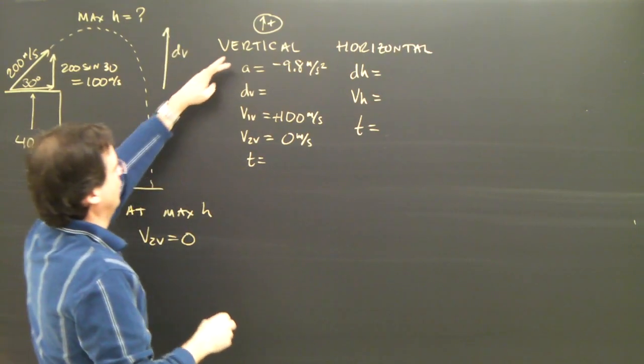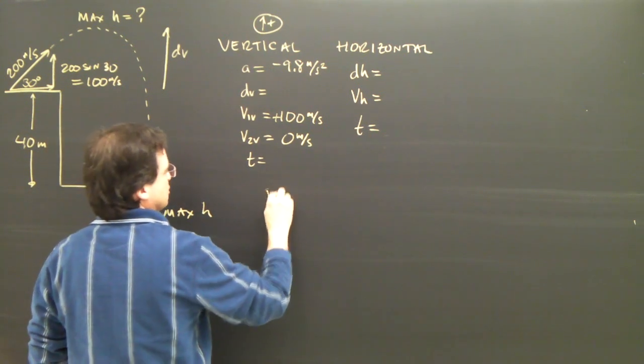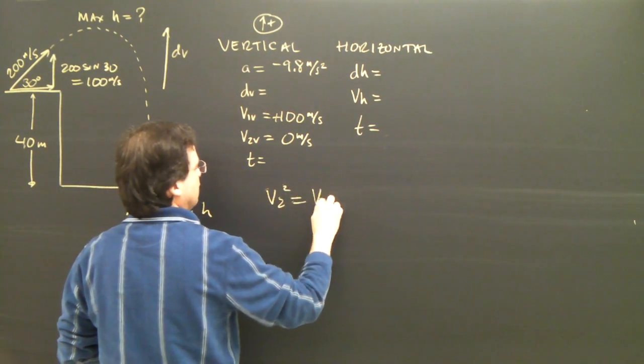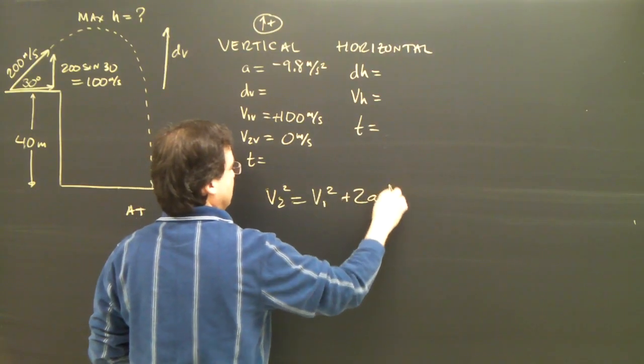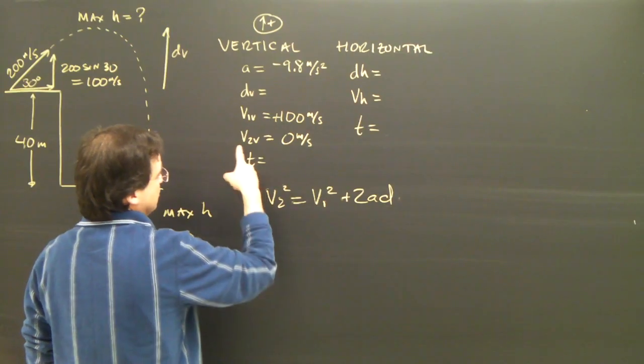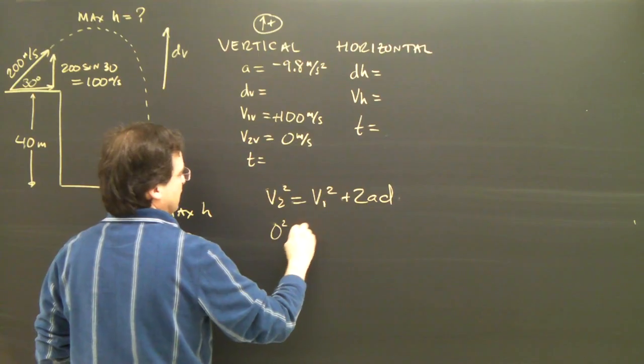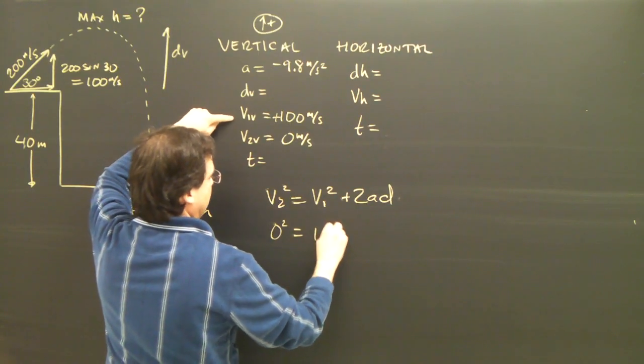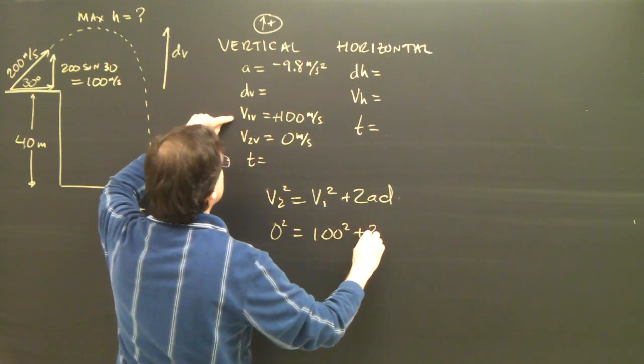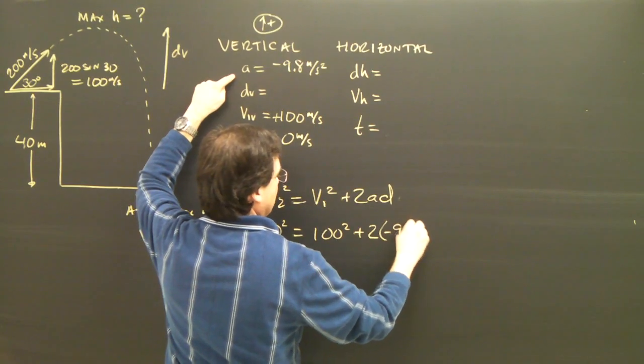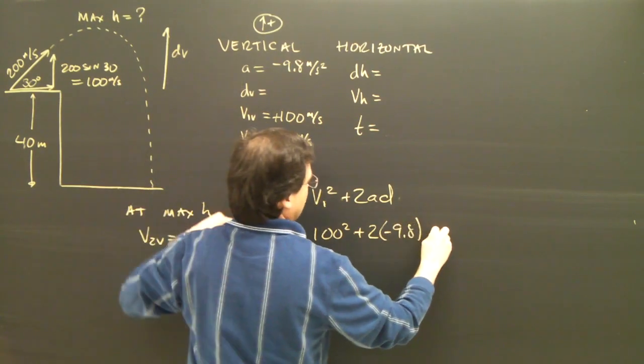So I've got a, v1, and v2. The equation I'm going to use is v2 squared equals v1 squared plus 2ad. I plug into it, v2 is zero. V1 is 100 squared plus 2 times negative 9.8. And I'm looking for d.